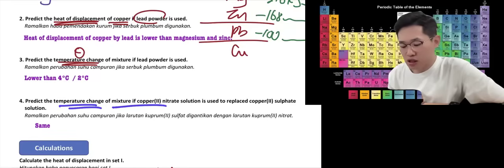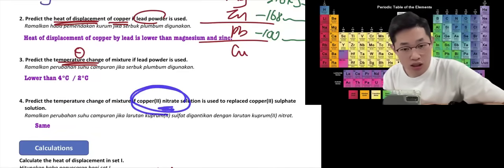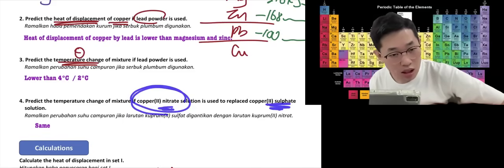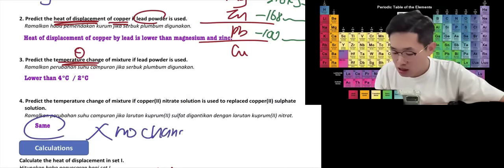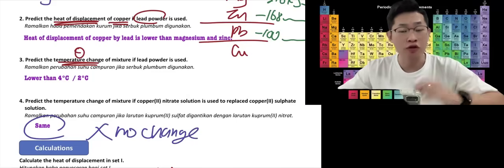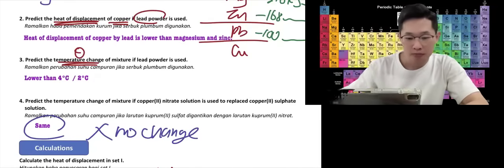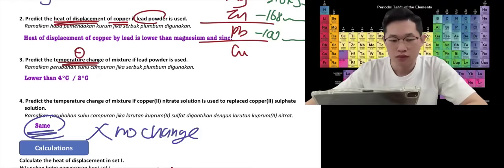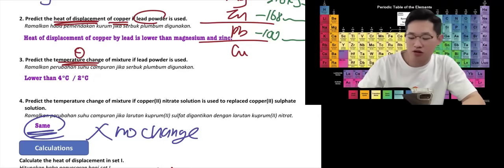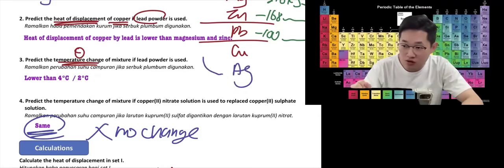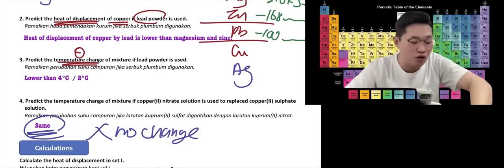If asked to predict the temperature change when copper-2-nitrate solution replaces copper-2-sulfate solution, the answer is the same — don't say 'no change,' as that means there's no reaction. 'No change' applies when, for example, silver is used to displace copper — there's no reaction because silver is less electropositive than copper.